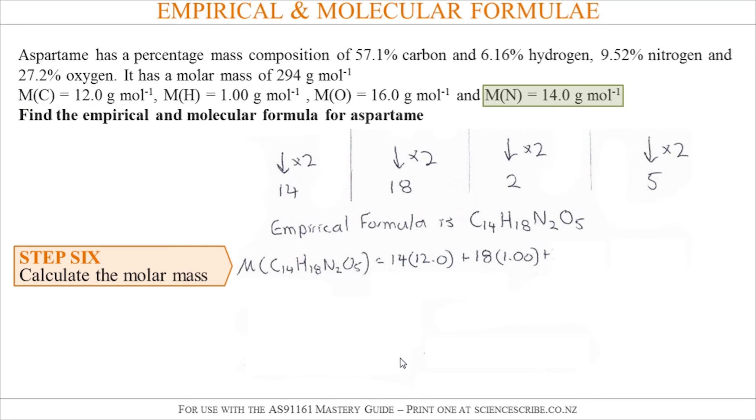Followed by 18 hydrogens times 1, the one's from the 1 gram per mole which is the molar mass of hydrogen. Similar treatment for nitrogen and oxygen. Hit equals: 294 grams per mole. Again, remember I'm presenting to three significant figures.